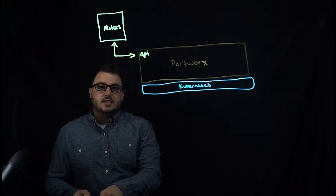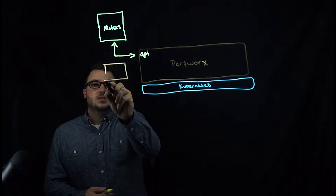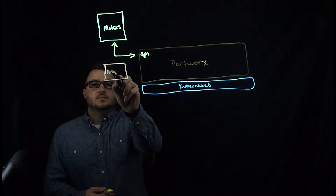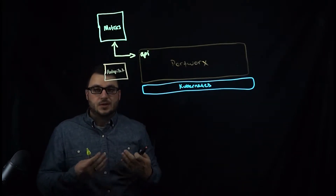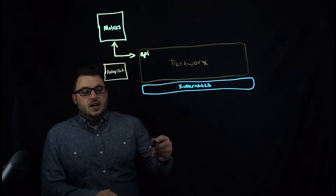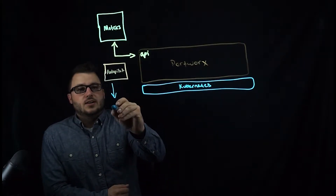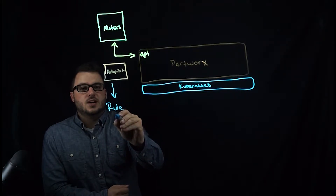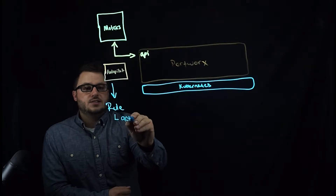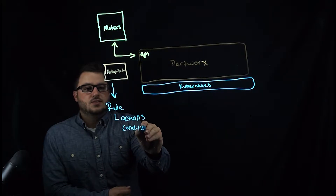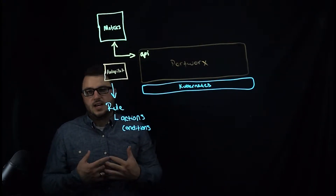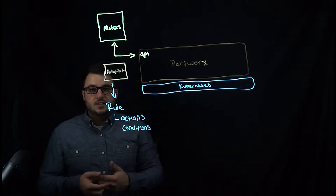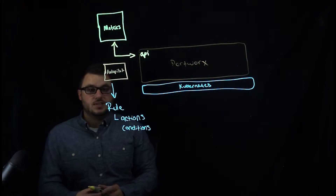Once that is complete, you can deploy what is called Autopilot. As the name suggests, this is all about automatically doing operations when conditions are met. When we talk about Autopilot, there are rules, and these rules are made up of actions and conditions. Actions and conditions are things that the metrics are going to provide — things like capacity. That's what we're going to focus on today.